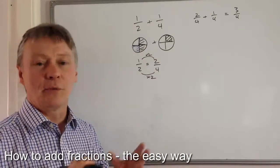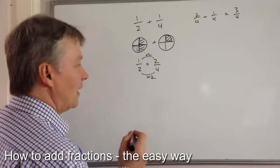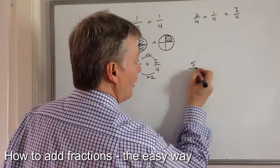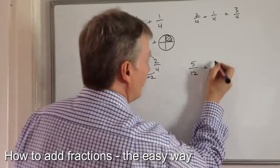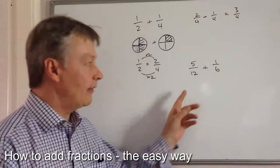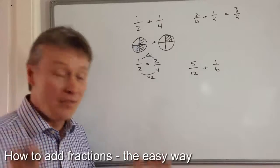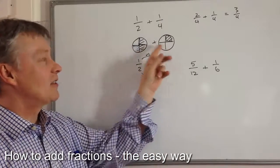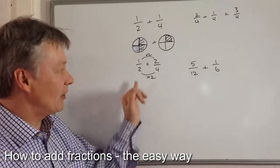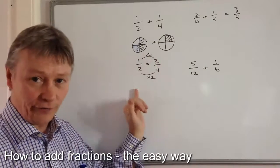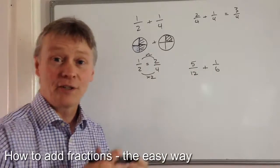That's the general principle we're going to use. Now let's get a little bit more sophisticated and look at something like five over twelve plus one over six. The problem we've got is that the bottom numbers are different and we need to make them the same in order to add them properly together. So again, I'm going to use the idea of equivalent fractions and rather than having a six, I'm going to make them both twelve.